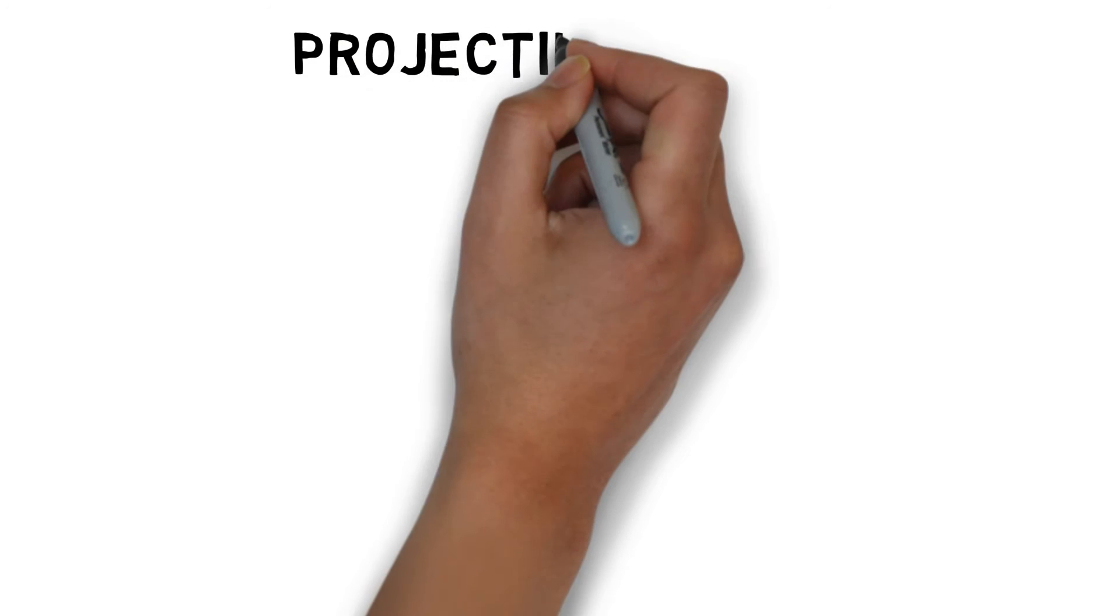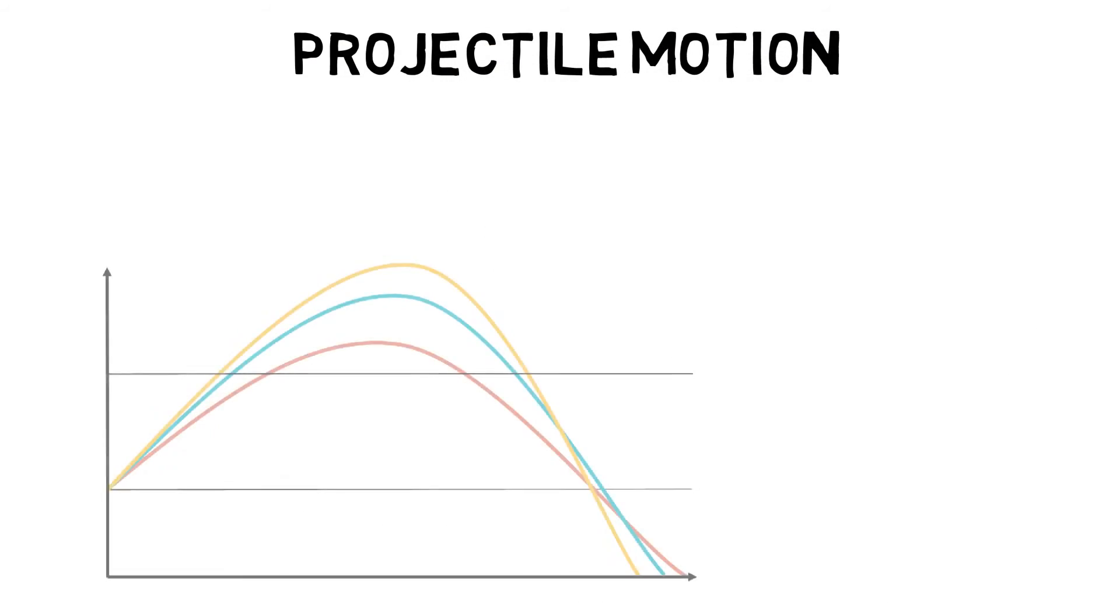Projectile motion looks at objects that are in flight. They can be our bodies flying through the air off a diving board, or a javelin being launched as far as possible. The flight path of a projectile is dependent on three things.